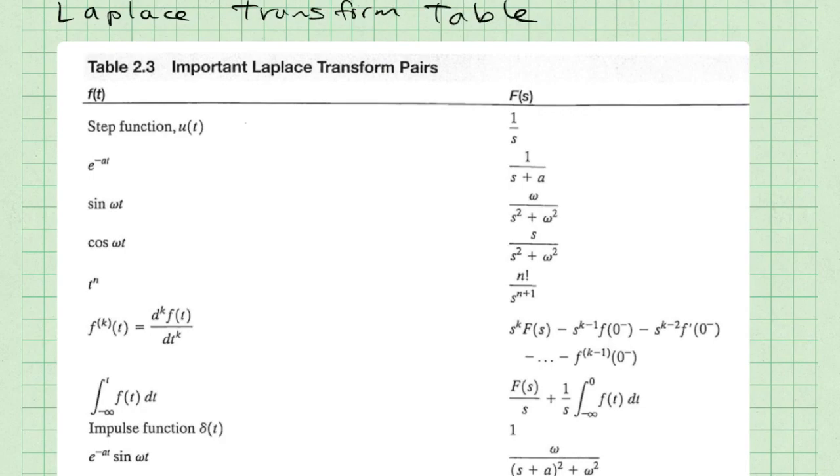Many functions have established Laplace transforms. What I'm going to do is to point to the important ones for control systems on this table. The step function u(t), which we discussed, has a Laplace transform of 1/s. e^(-at) is very important because many of the characteristic modes in differential equations can be represented as e^(-at). Now, strictly speaking, for most of these important pairs, there should be a u(t) appended to the end. Sine ωt, cosine ωt, t^n, all should be appended by u(t). These are all important.